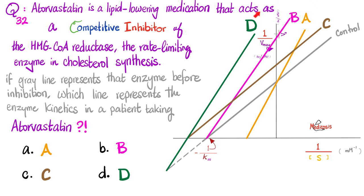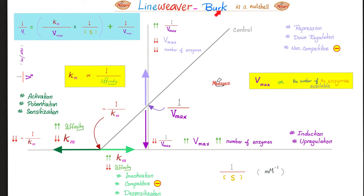Next: atorvastatin is a lipid-lowering medication that acts as a competitive inhibitor of HMG-CoA reductase, the rate-limiting enzyme in cholesterol synthesis. If the gray control line represents HMG-CoA reductase before inhibition, which of the following lines — A, B, C, or D — represents the same enzyme in a patient already taking atorvastatin? Please pause and try to answer yourself.